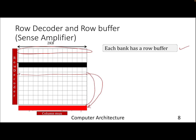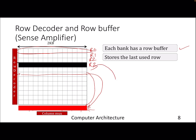Each DRAM chip is a collection of banks, and each bank has one row buffer. This row buffer exploits locality — it stores the last used row with the anticipation that the row will be used again. For example if row number 3 is put in the row buffer, it speculates that future requests will also go to row number 3. Since rows are in kilobytes, if there is locality in your accesses you will get a hit in the row buffer.